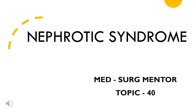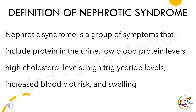Let's see the condition in detail. The definition of nephrotic syndrome: it is a group of symptoms that include protein in the urine, low blood protein levels, high cholesterol levels, high triglyceride levels, increased blood clot risk, and swelling.